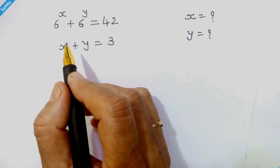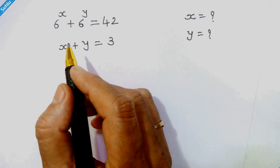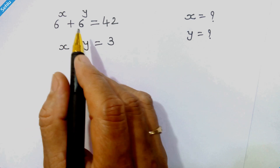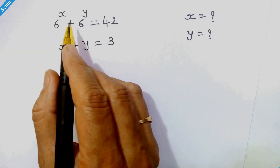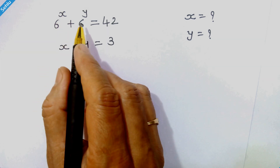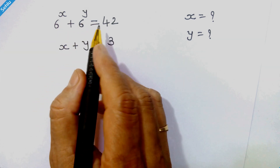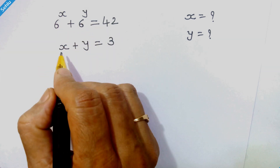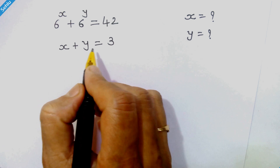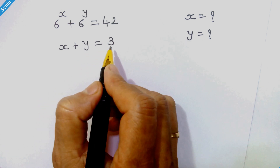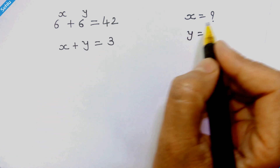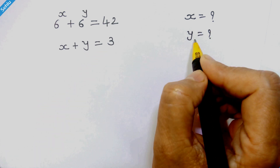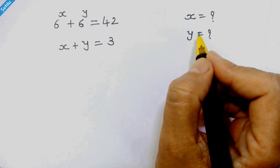Hello friends, here we have a very nice system of equations. 6 raised to x plus 6 raised to y is equal to 42, and x plus y is equal to 3. Let's find out x and y.